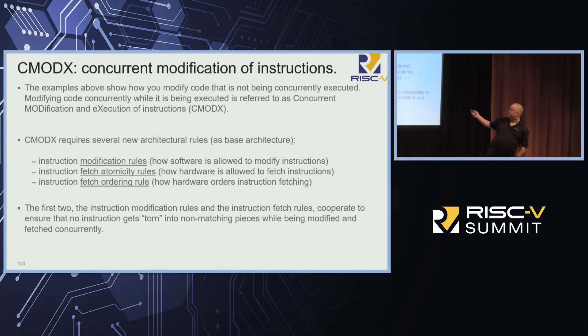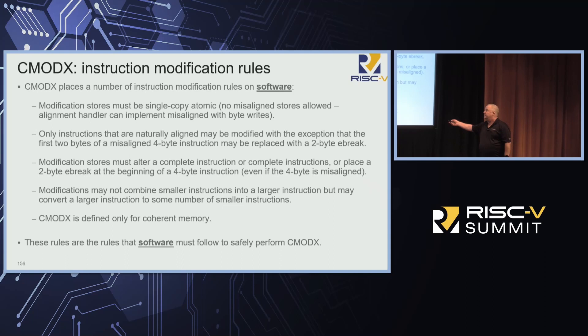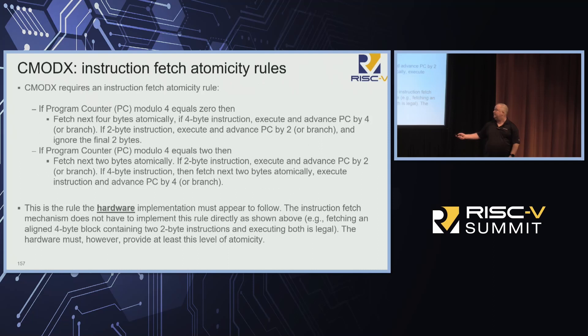We'll have one more rule called the fetch ordering rule — we'll need this to make JITs work, but we'll come to that later. This slide is the set of rules for what software can and cannot do when doing C mod X. Notice it only works in coherent memory. The short version: if you're going to modify an instruction, modify the whole thing and do it atomically — please don't cut it in half.